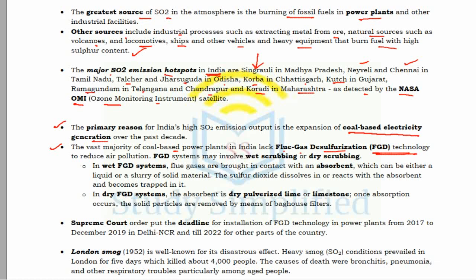FGD systems involve wet scrubbing or dry scrubbing. In wet scrubbing, flue gases are brought into contact with an absorbent — either a liquid or a slurry of solid material — which dissolves and traps the SO2. In dry systems, the absorbent is dry pulverized lime or limestone, and the same absorption takes place. The Supreme Court has set a deadline for the installation of FGD technology in power plants: December 2019 for the Delhi NCR region and by 2022 for other parts of the country.